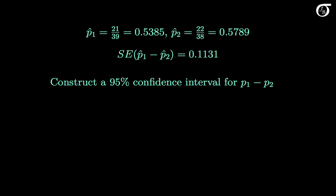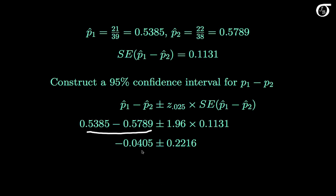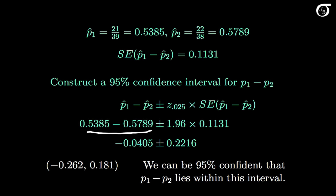Here again are the sample proportions and the standard error. Suppose we wish to construct a 95% confidence interval for the difference in population proportions, p1 minus p2. The point estimate of p1 minus p2 is just p1 hat minus p2 hat, the difference in the sample proportions. For the margin of error, the appropriate z value for a 95% confidence interval is 1.96, and we just calculated the standard error to be 0.1131. The difference in the sample proportions is minus 0.0405, and the 95% margin of error is 0.2216. If we carry out the addition and subtraction, we get the 95% confidence interval of minus 0.262 to 0.181.